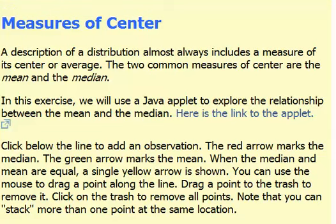So the directions say click below the line to add an observation. The red arrow marks the median, the green arrow marks the mean. When the median and the mean are equal, a yellow arrow shows. You can use the mouse to drag a point along the line, drag a point to the trash to remove it. Click on the trash to remove all the points. Note that you can stack more than one point at the same location.